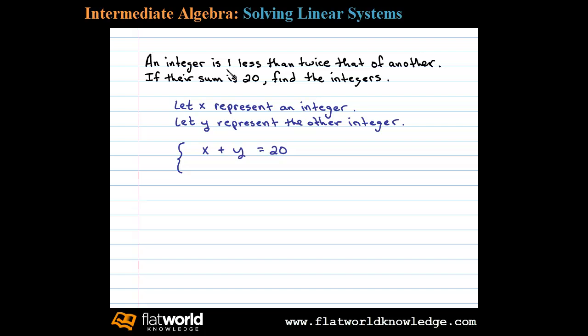Now the second equation can come from the fact that one of the integers is one less than twice that of the other. In other words, Y is equal to 2X minus 1. That's one less than twice the other, and that's our setup.